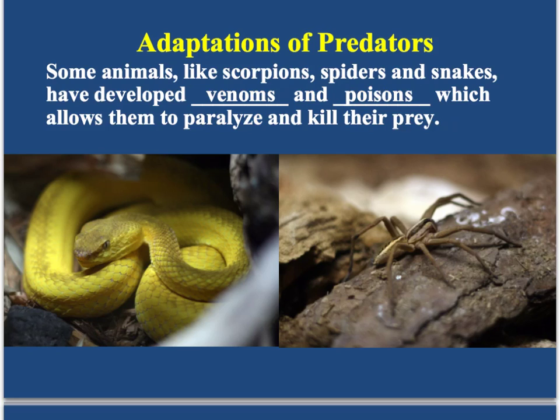Animals like snakes, scorpions, and spiders create poisons in their bodies — they're venomous. It's a way for them to easily catch their prey. A snake will have fangs in its mouth with venom inside. This is a brown recluse spider, which is really poisonous. When they bite their victim, they pretty much paralyze it, and then it's easy for them to eat whatever they're after.